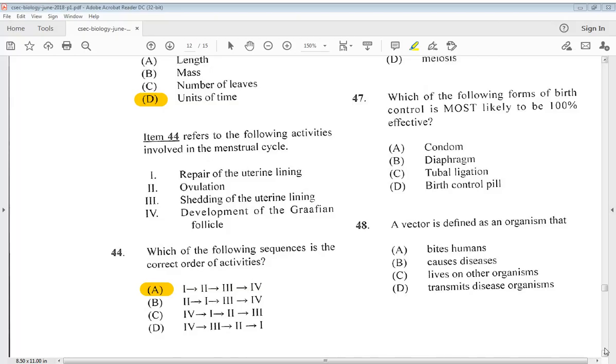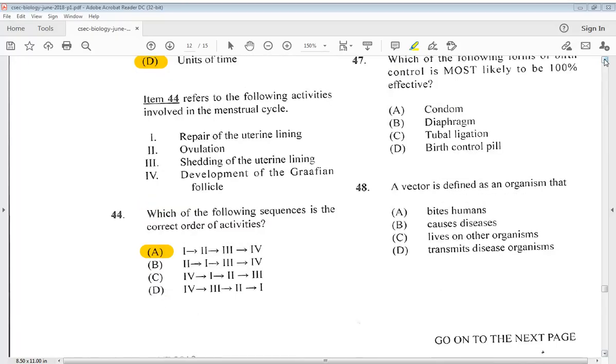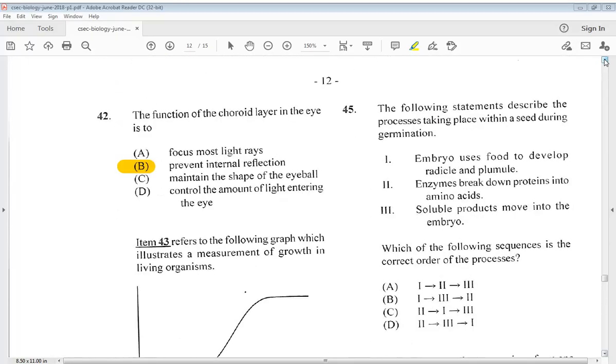Let's go to number 45. The following statements describe the processes taking place within a seed during germination. 1. Embryo uses food to develop radicle and plumule. 2. Enzymes break down proteins into amino acids. 3. Soluble products move into the embryo. Which of the following sequences is the correct order of the processes? So we know it begins with 2, enzymes break down proteins into amino acids, then 3 soluble products move into the embryo, and then 1. So we have 2, then 3, then 1. D.